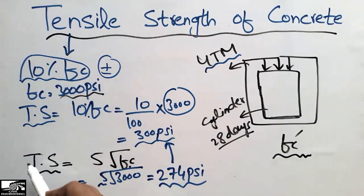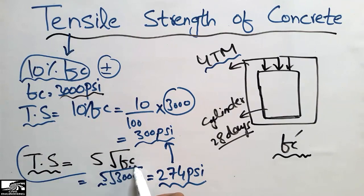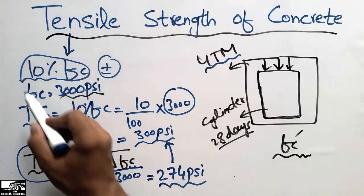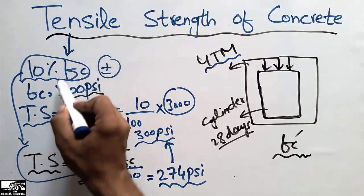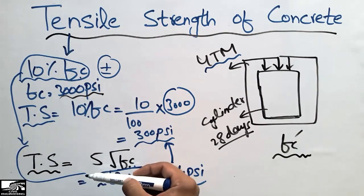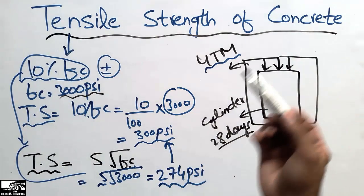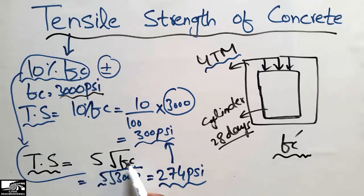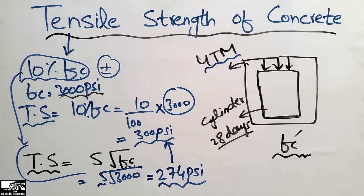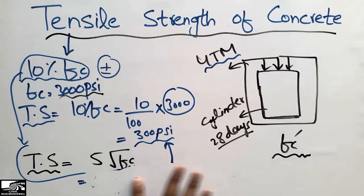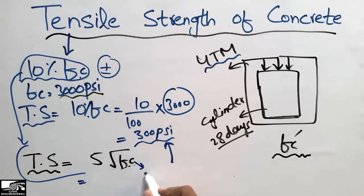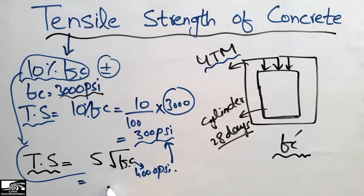So both formulas — tensile strength = 5√fc, and tensile strength ≈ 10 percent of compressive strength — are used to find the tensile strength of concrete. The formula 5√fc is considered the more accurate one. For another example, if the compressive strength of concrete is 4,000 psi...